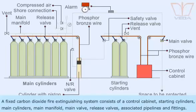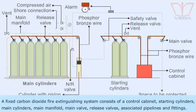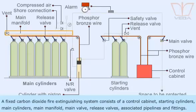A fixed carbon dioxide fire extinguishing system consists of a control cabinet, starting cylinders, main cylinders, main manifold, main valve, release valves, and associated pipelines and fittings.